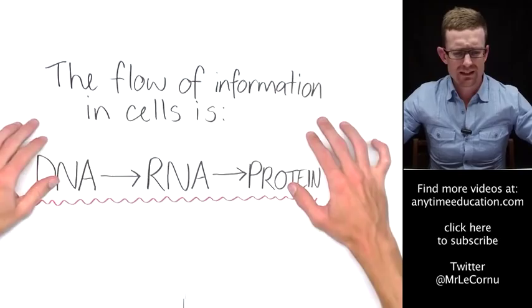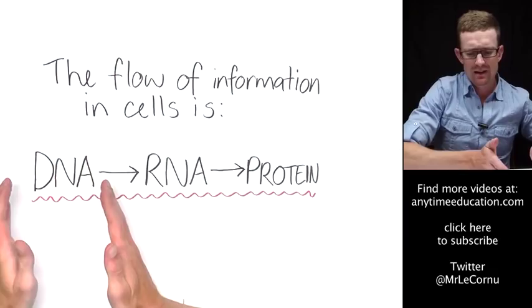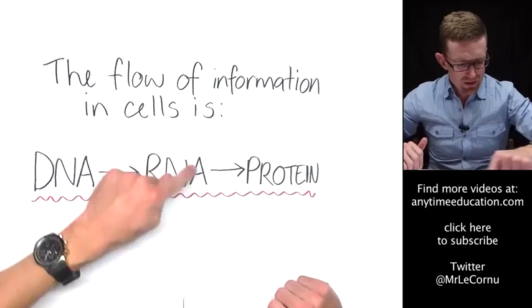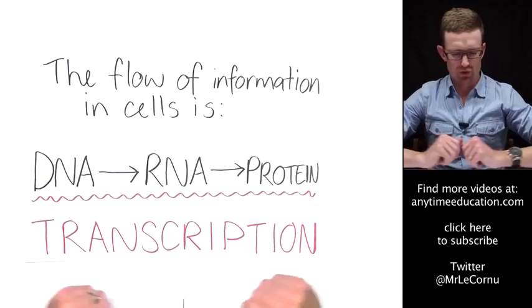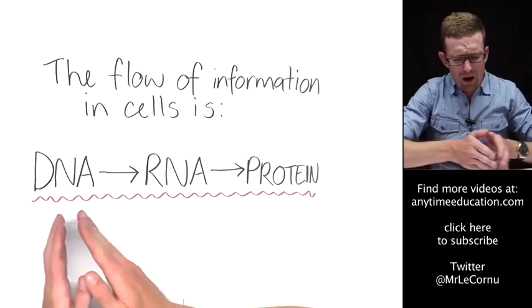First of all, we need to understand the flow of information in cells is from DNA to RNA to protein, and we're going to focus on that first part, going from DNA information to RNA information in a process called transcription.